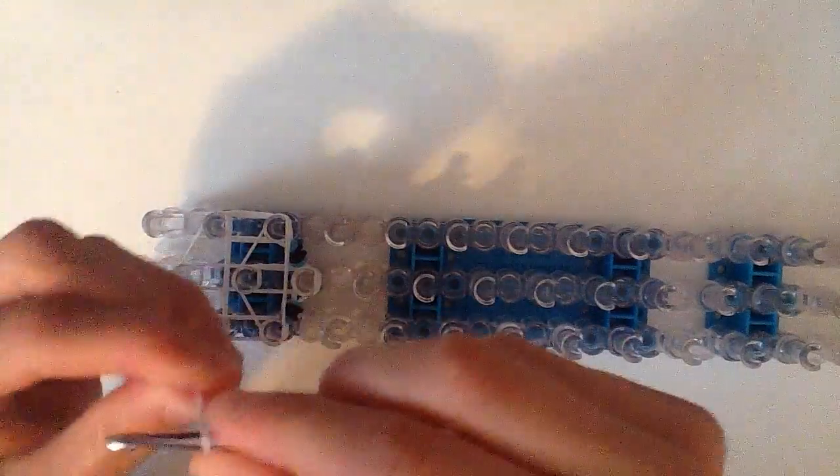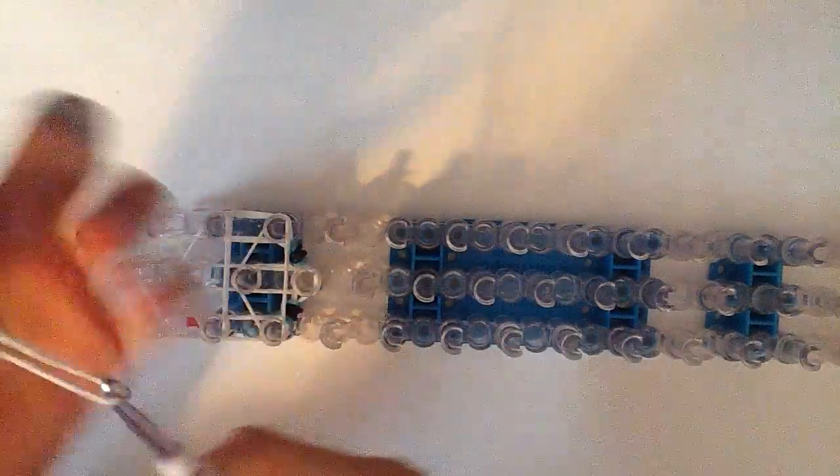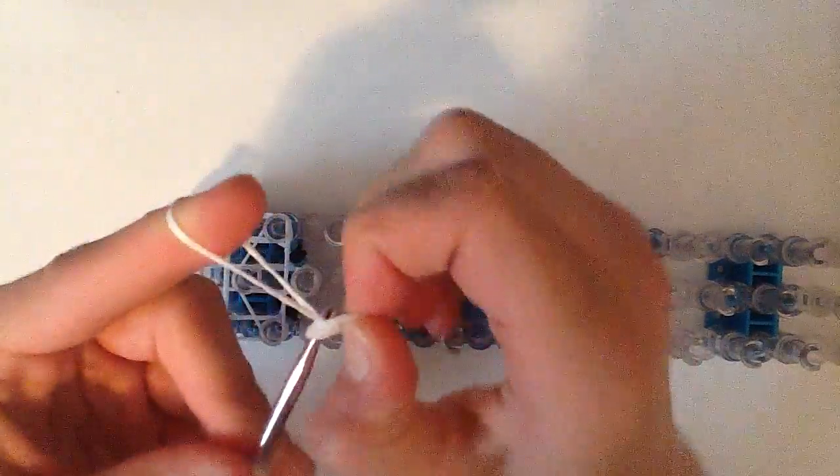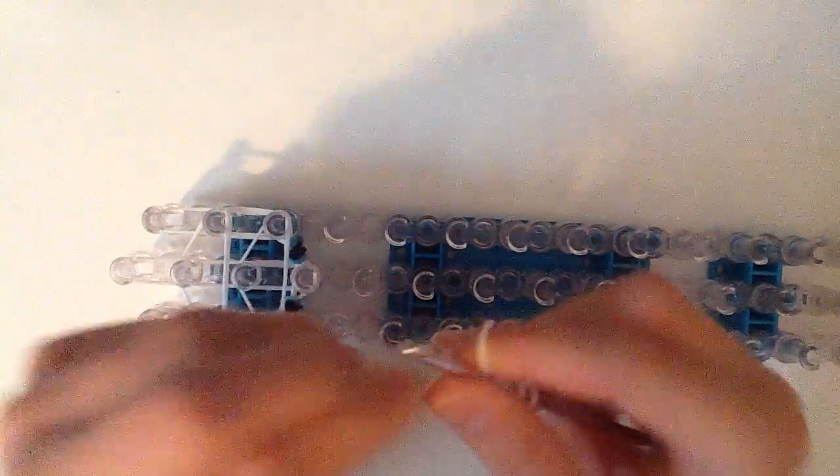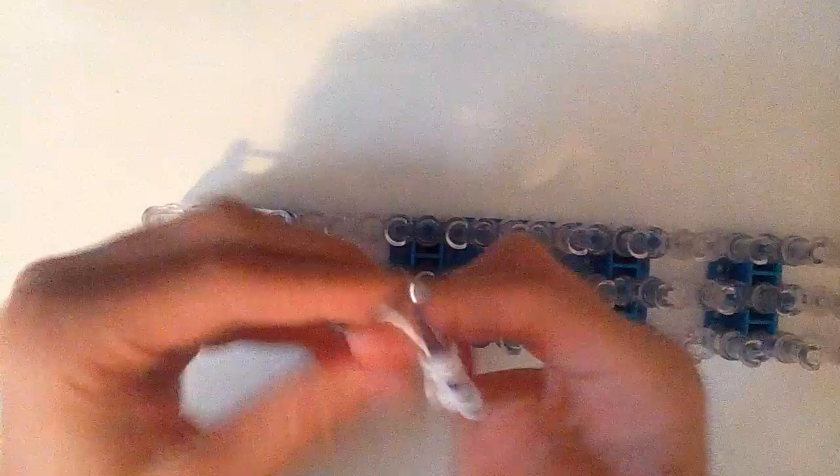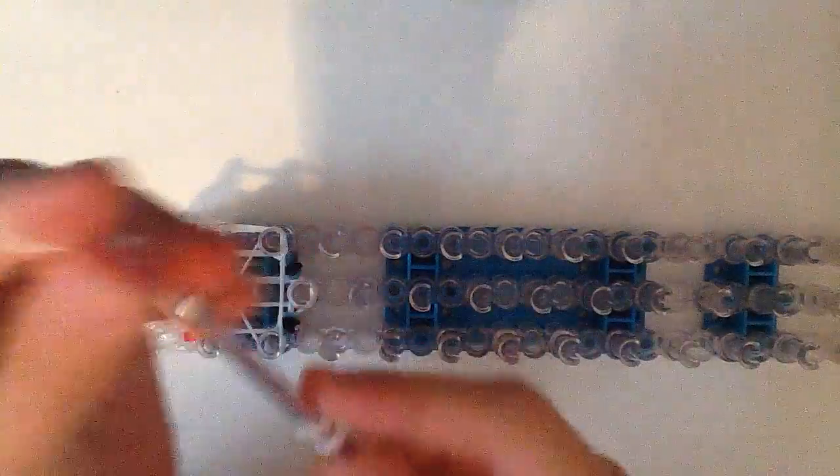So you're just going to do that again, 4 times, double looped white, pull it all on, and then we're going to take a single white. Hold with something. Four times again. Reclaim. Double loop. Pull them all.